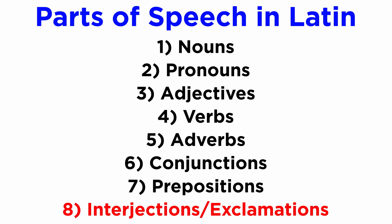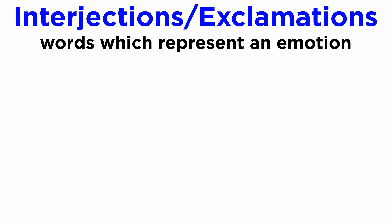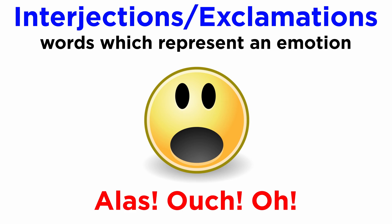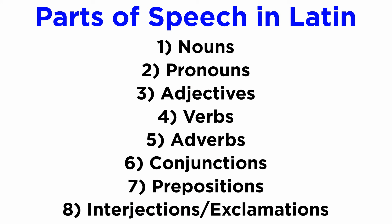Finally, we have interjections or exclamations. These are little words which represent an emotion. They are invariable. Examples would include: alas, ouch, oh. With the eight parts of speech now outlined, we will have to take quite a bit of time to go through each of them one by one and learn how Latin deals with them. So let's move forward and get a closer look at nouns first.